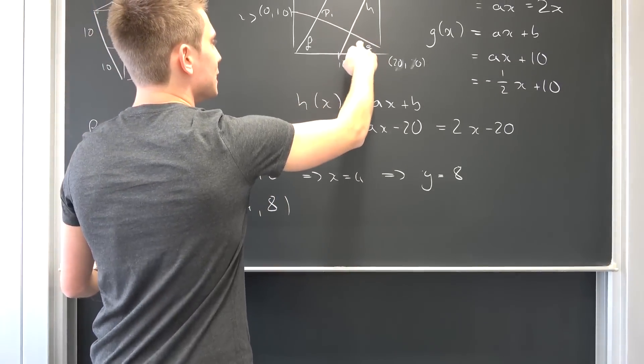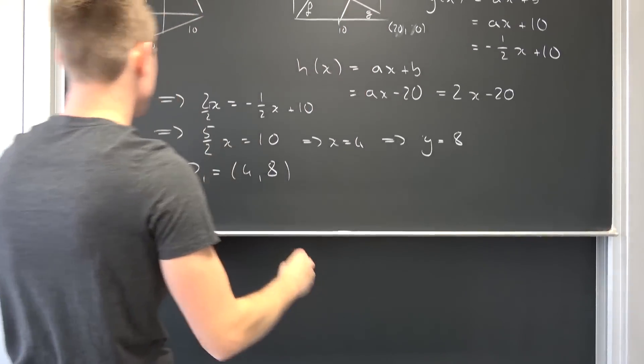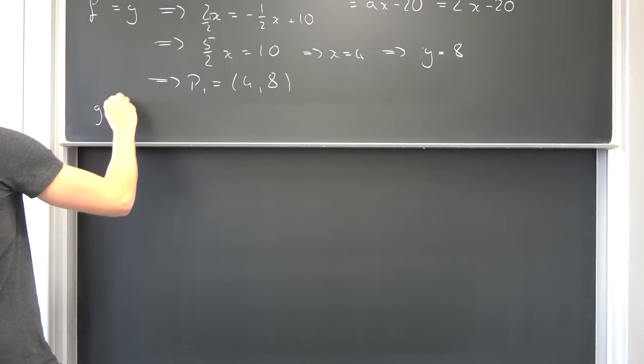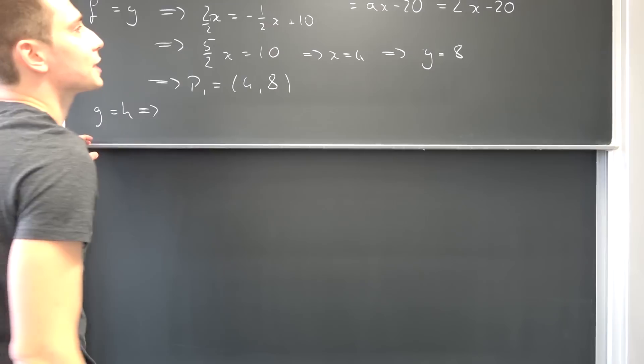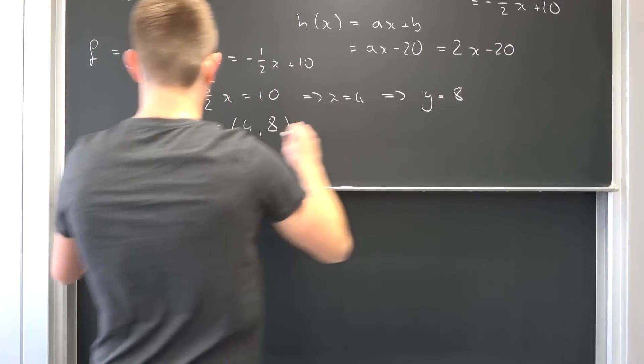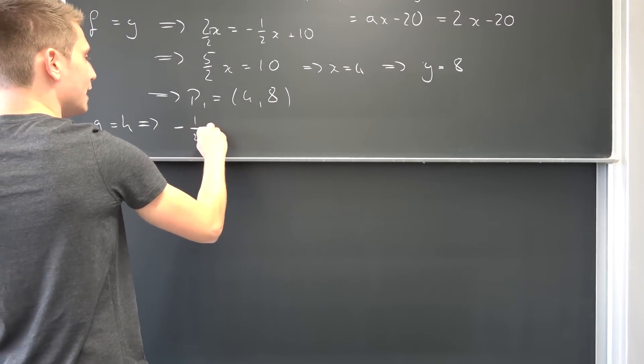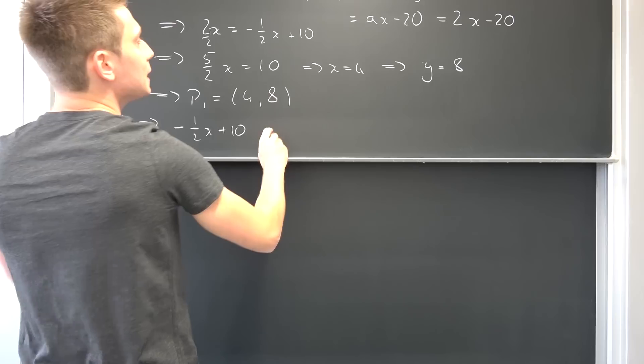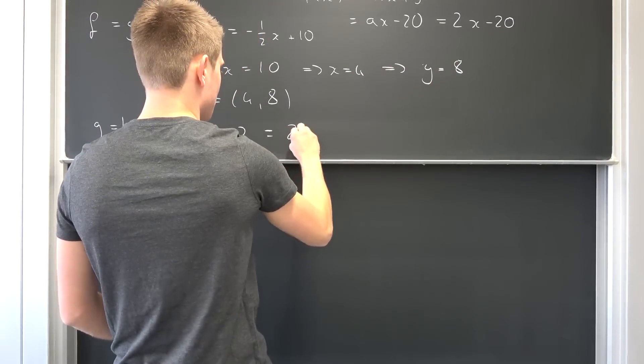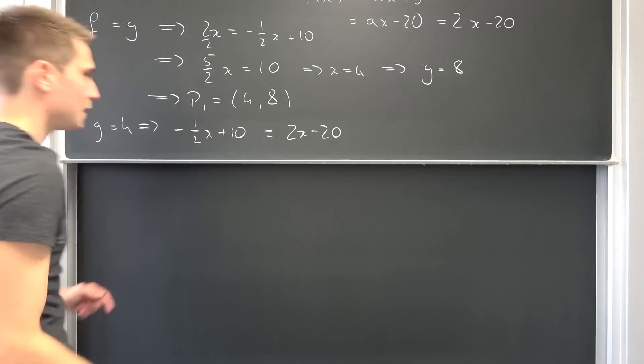Now what else do we have? We are going to take a look at the intersection of h and g. When is g equal to h? Well this is exactly the case when we have negative 1 half x plus 10 being equal to 2x minus 20.